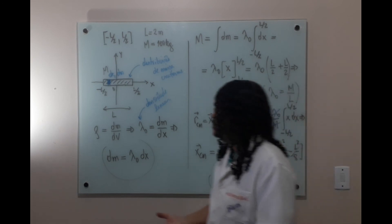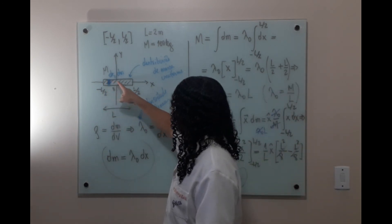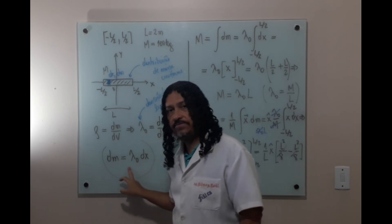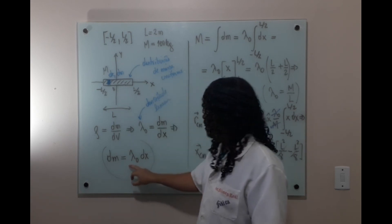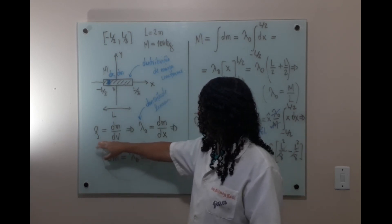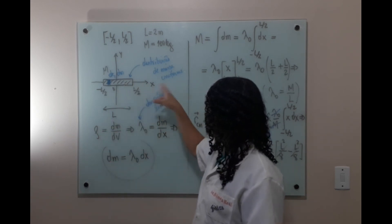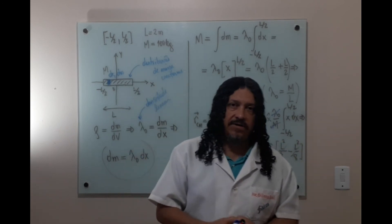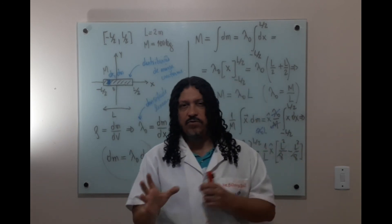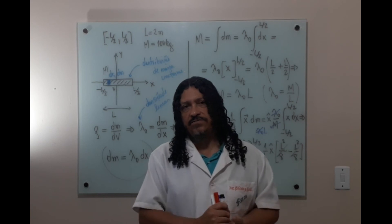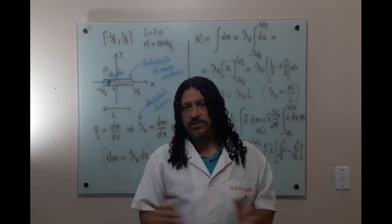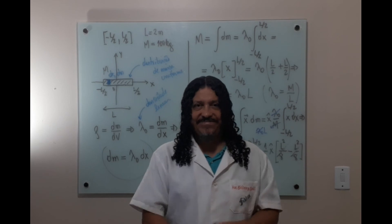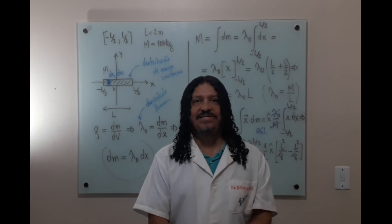Nem sempre isso acontece. Se a distribuição não for uniforme, a gente tem que descobrir qual é a função da densidade em relação às posições. Sabendo isso, a gente consegue também fazer a integral — ela fica um pouco mais trabalhosa de resolver, mas é possível na maior parte dos casos. Ok? Até a próxima!